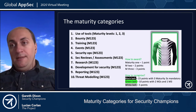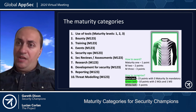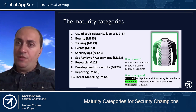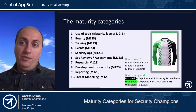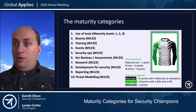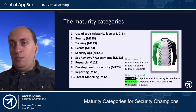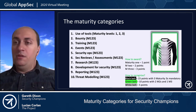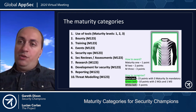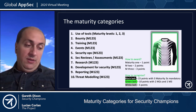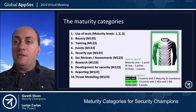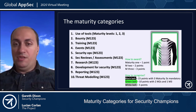Finally, threat modeling refers to design and the contribution of developers to security and privacy by design. This can be done at various maturity levels: you can participate in a threat model, organize a threat model, or document a threat model properly. Each of these will be associated with different maturity levels for this category.